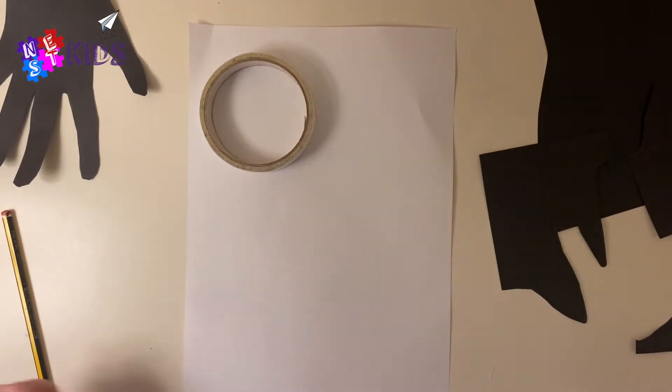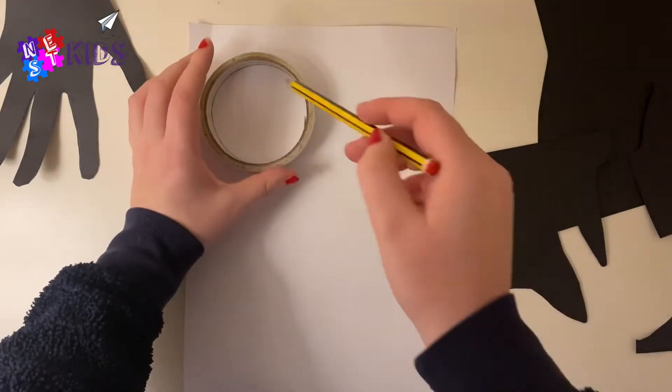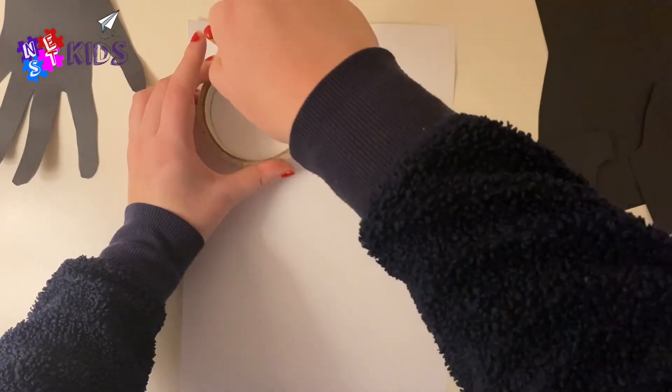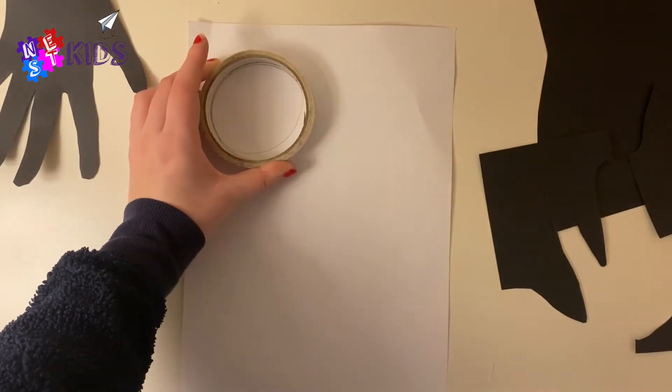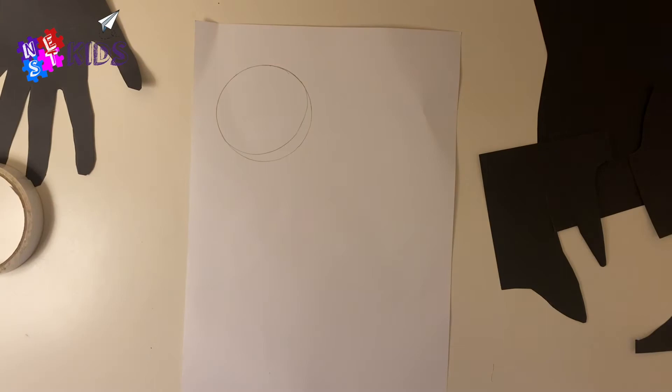Get your white piece of paper or card and find something to draw a circle with. It could be a cup, or I've used some tape here. Draw a circle on your white piece of card.